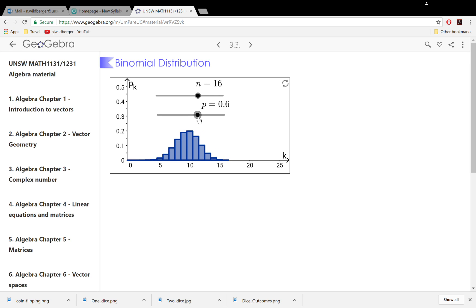Similarly, we could drop that probability, make the chance of a head smaller. Here we have a 0.1 or 10% chance of getting a head.